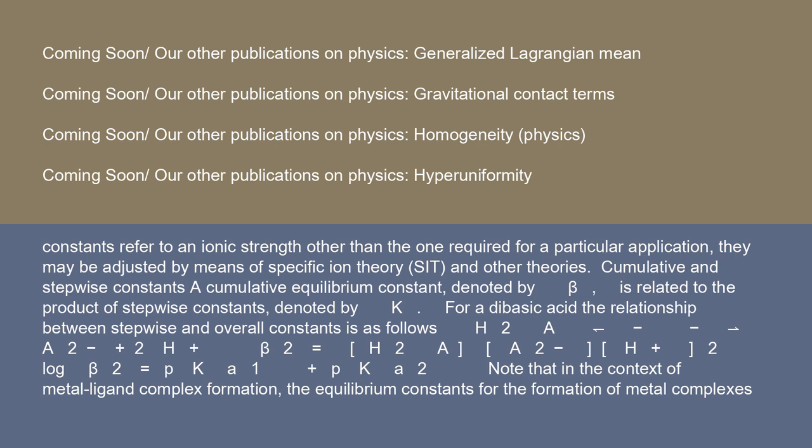A cumulative equilibrium constant, denoted by β, is related to the product of stepwise constants, denoted by K. For a dibasic acid, the relationship between stepwise and overall constants is as follows: H₂A ⇌ A²⁻ + 2H⁺, β₂ = [A²⁻][H⁺]²/[H₂A], and log β₂ = pKa₁ + pKa₂. Note that in the context of metal-ligand complex formation, the equilibrium constants for the formation of metal complexes are usually defined as association constants.